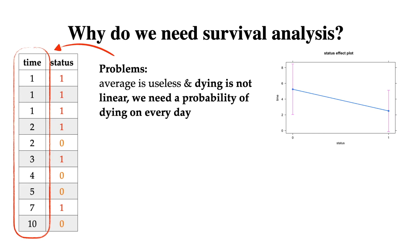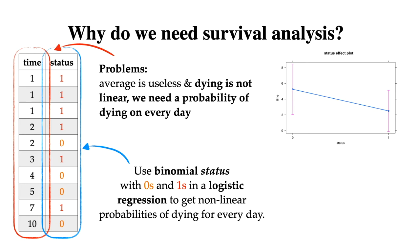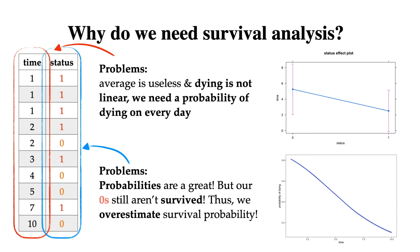That's why we need the probability of dying on every day. Since I was thinking about probability of dying each day, I thought about using the binomial variable status with zeros and ones in logistic regression to get nonlinear probabilities of dying for every day. The results looked promising — we could catch the nonlinear trend and calculate probabilities for every day. But the key problem that remains is that we can only model probabilities of dying, while our zeros are still not survivors. Thus we overestimate survival probability if we use logistic regression and model zeros as survived and ones as not survived.